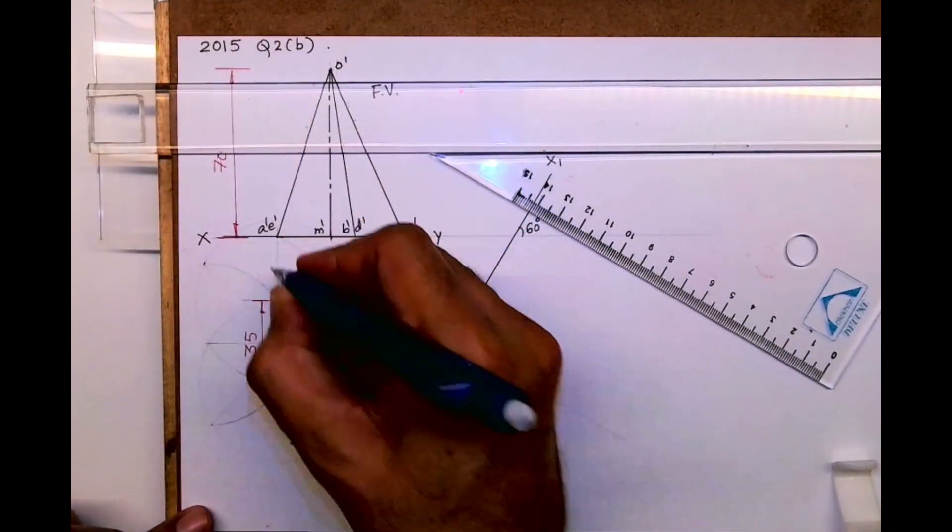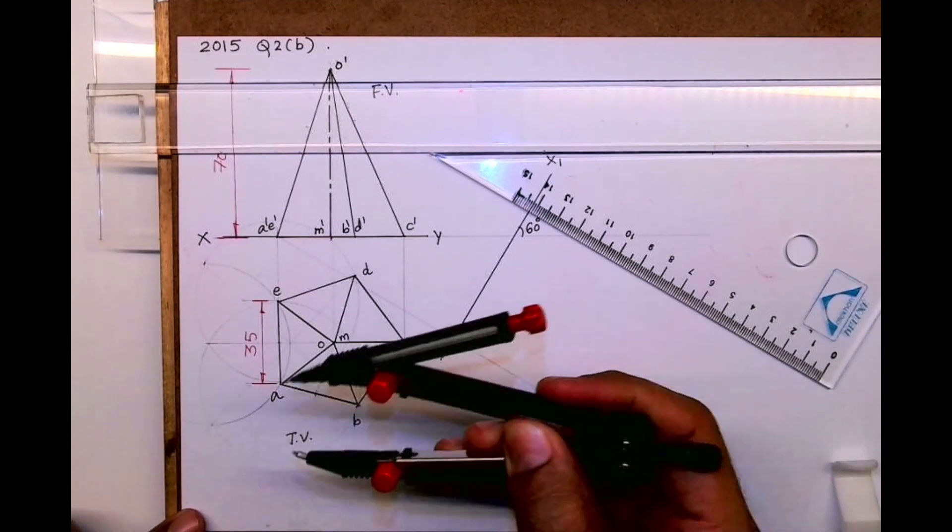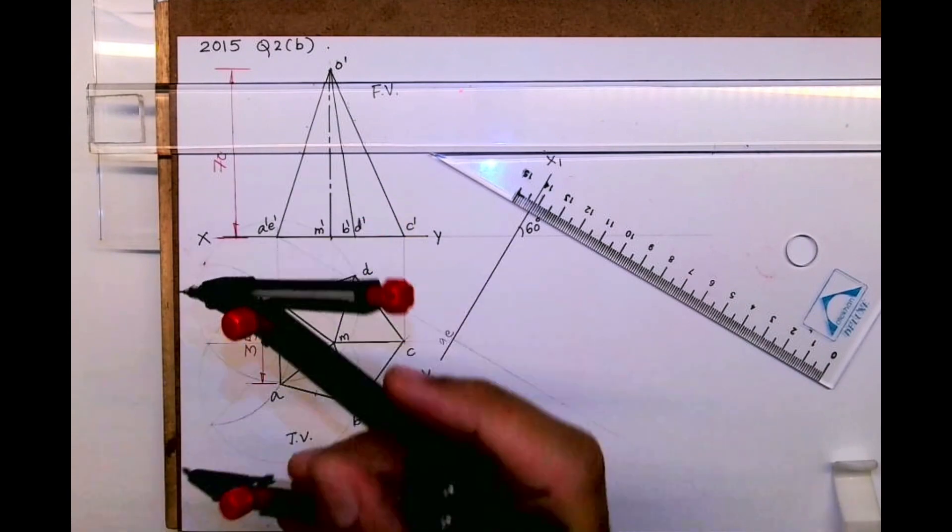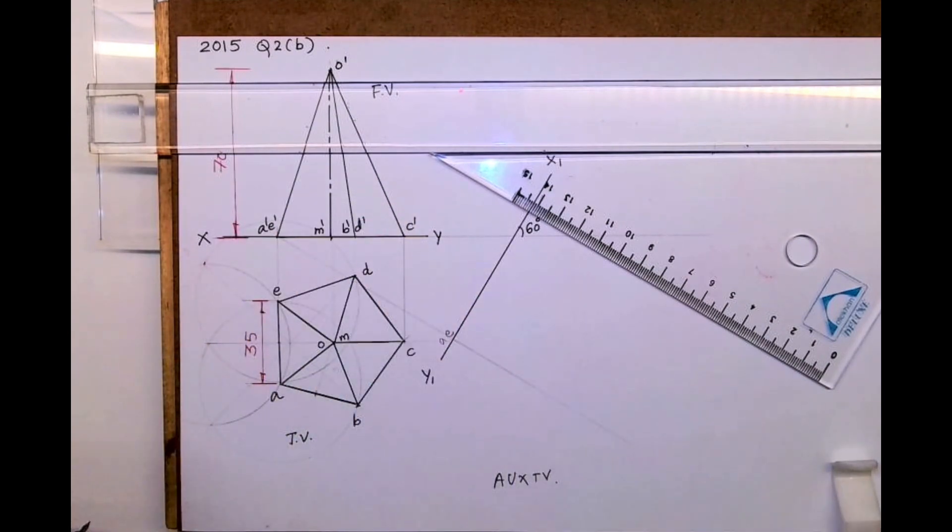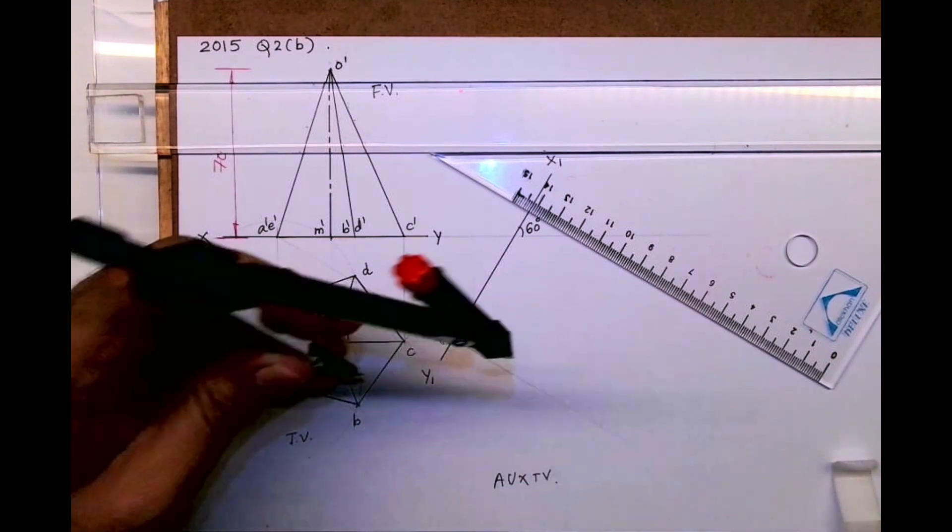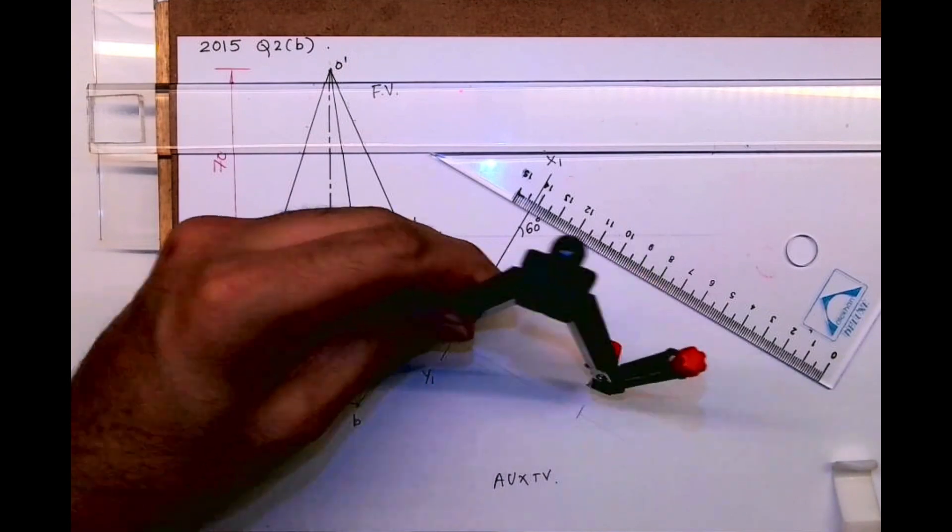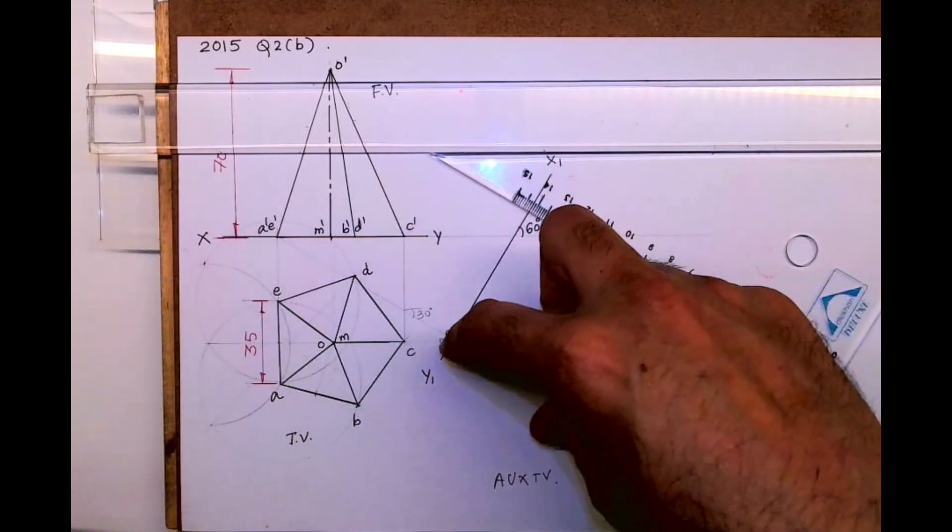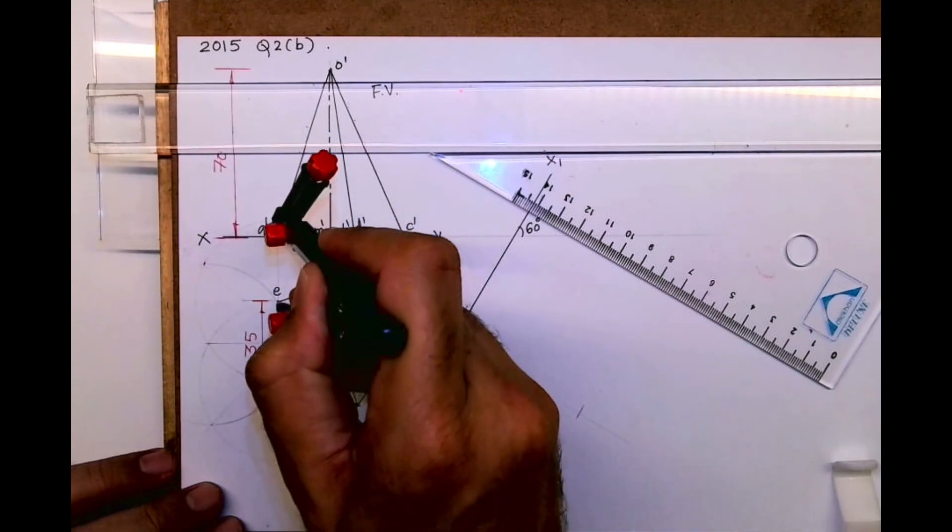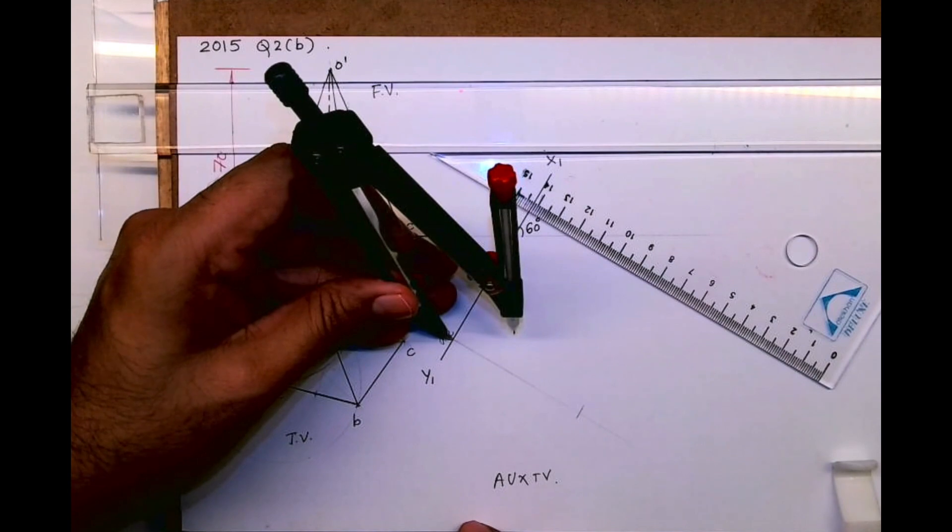Here I am writing A and E. What I am doing is taking A to XY, whatever distance I am getting, that I will mark from X1Y1. See, this is the 30-degree line, and from here I will cut at A. I am transferring width. Then again I am taking E to XY, whatever distance we have, that I will cut from E.